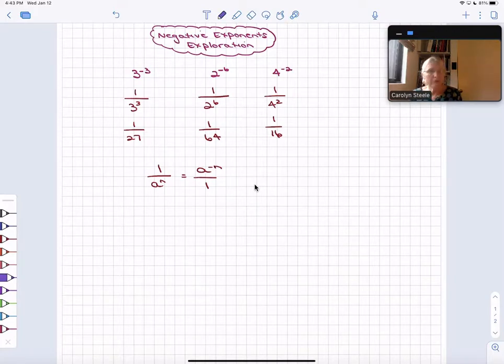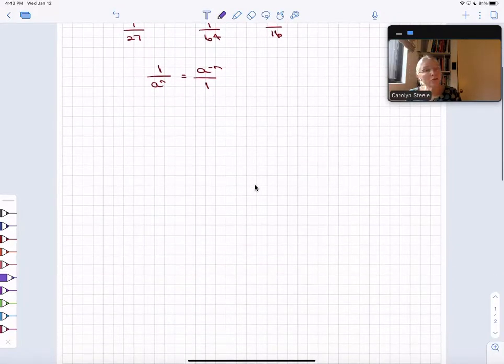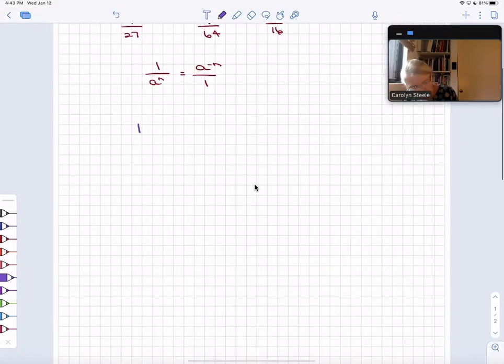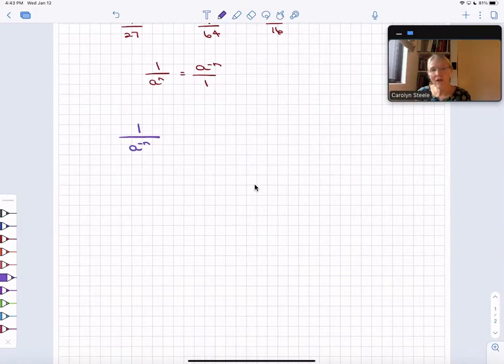All right, are you and your partner ready for your challenge? Here it is. I want you to figure out what 1/a^(-n) is. How can you write that using only positive exponents? Pause me, give it some thought, and then come back when you're ready.